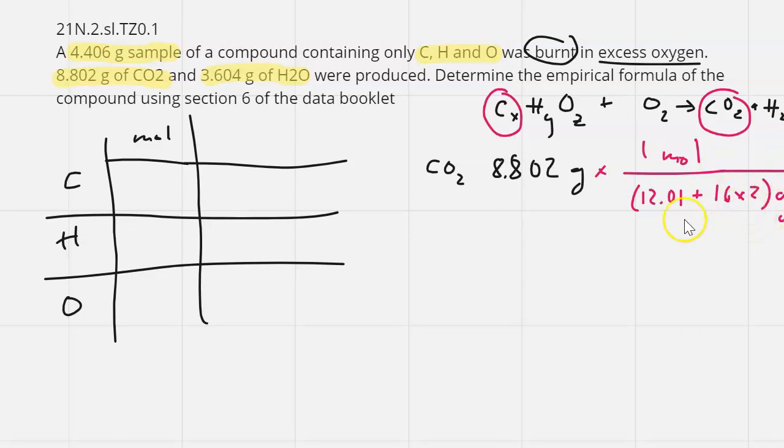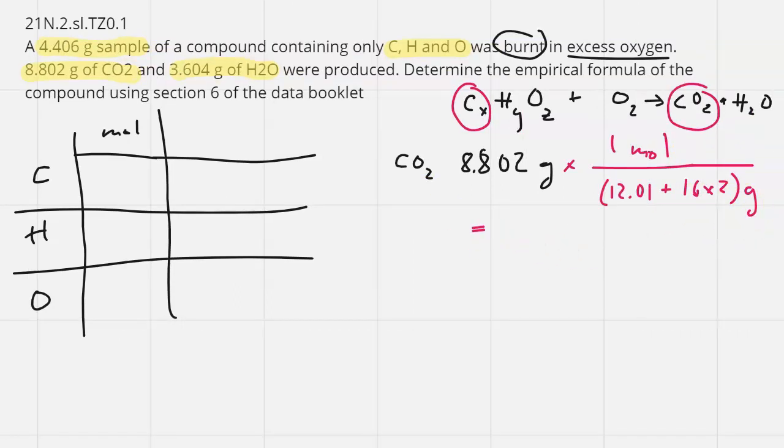Putting it in the calculator, we got 0.2 mole of CO2, and we know that the mole of CO2 equals the mole of carbon because all the carbons from CO2 come from the carbon inside the compound. So we could write here that the mole of C is 0.2 mole.